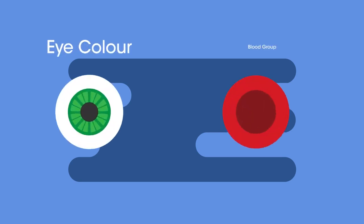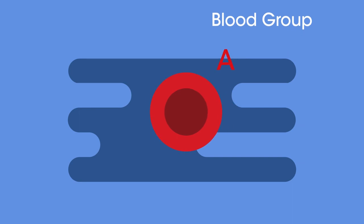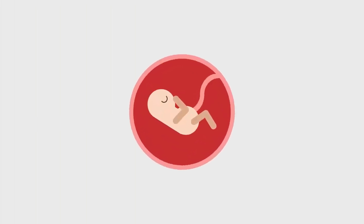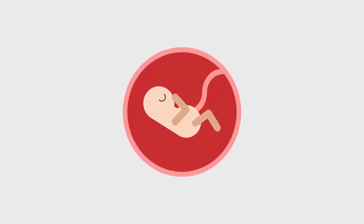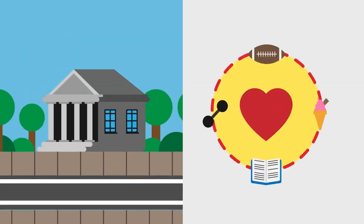Some examples of variation in humans that are controlled by genes include eye color and blood group. If you have blood group A, it's because you have the alleles for this characteristic. This is genetic variation, and it is something that you were born with and nothing can change it.